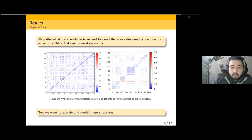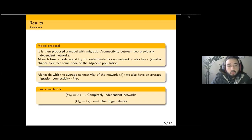This is our ongoing work that we intend to keep collaborating on. Our next objective is to relate this block structure with migration or connectivity between two populations. We then propose a model to explain how specific countries are synchronized and some more than others. We suppose now that there are two previously independent networks, each one with its own ongoing epidemic. Then at some point in time, you introduce connections between these two networks.